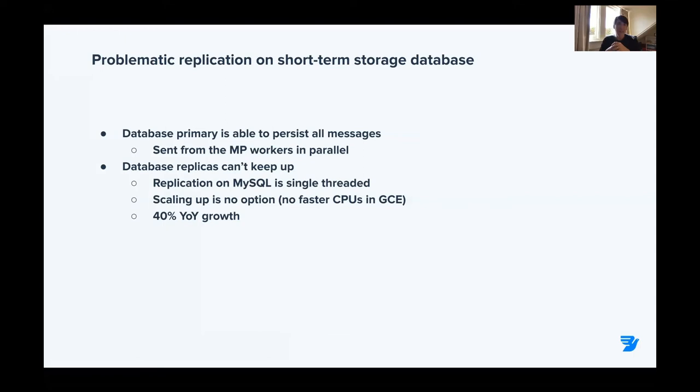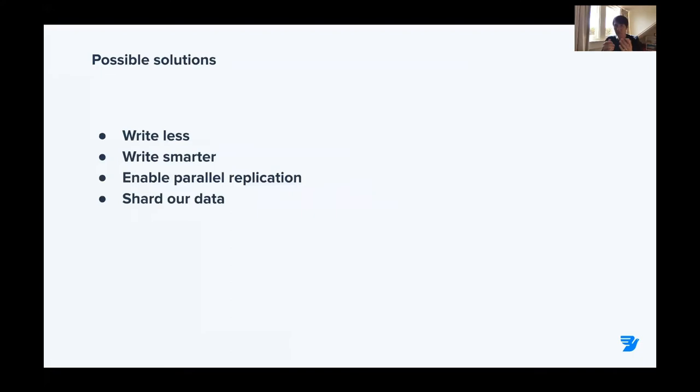As this is all stored in a single table in a single database, we are not able to do parallel replication. Scaling up is also not an option — we're in the Google Cloud, so there are no faster CPUs. And even if we could get faster CPUs, it wouldn't help much because we have 40% year-over-year growth to account for, which means within a couple of months we'd probably be back in replication lag.